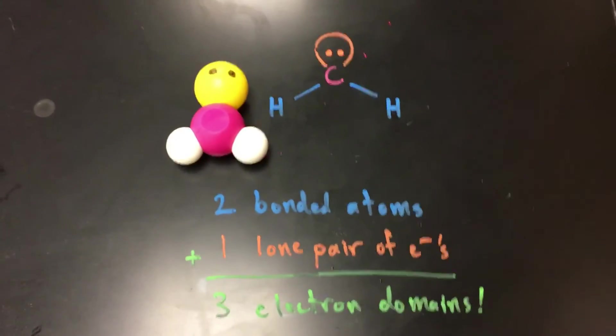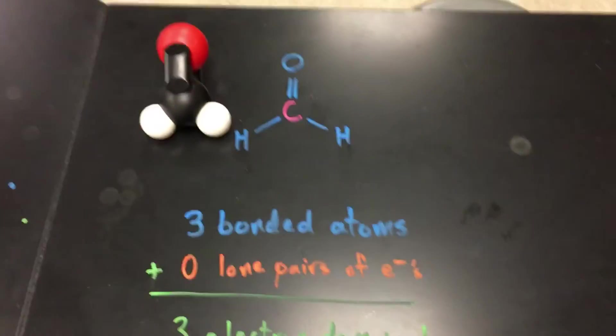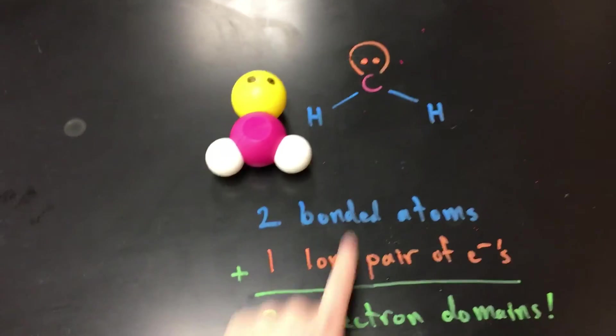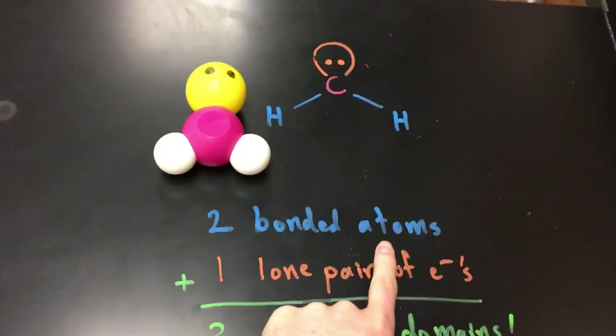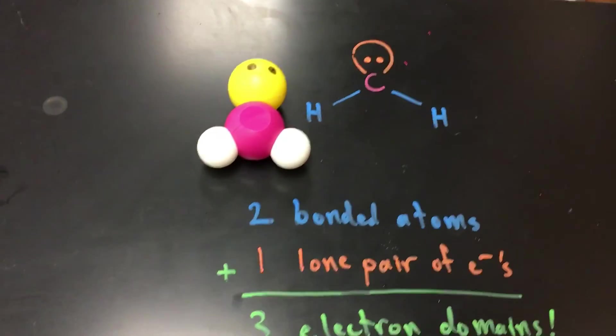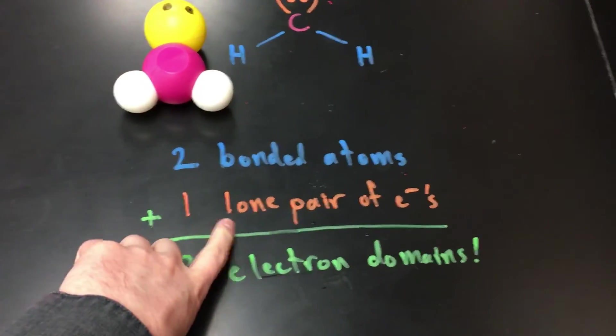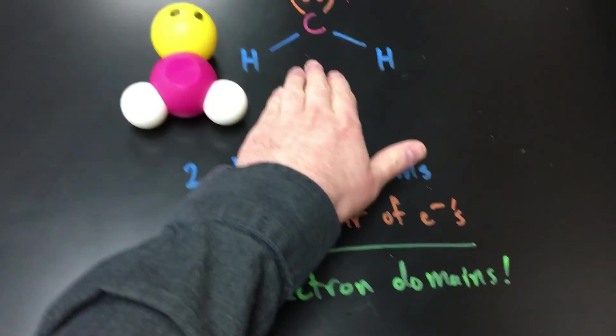So we can determine the shape of a molecule based on how many electron domains there are around the center atom. Note that we don't include the center atom in how many bonded atoms there are. We're just saying how many atoms are bonded to the center. And our lone pairs of electrons also only count for the center atom.